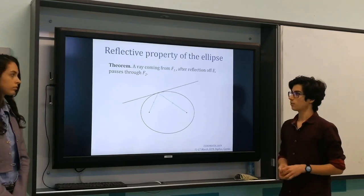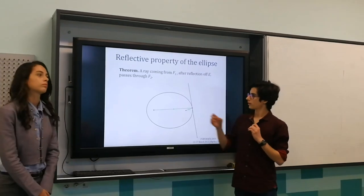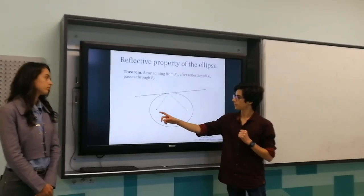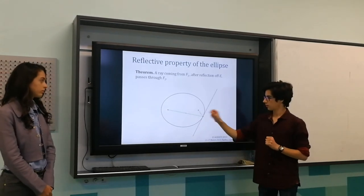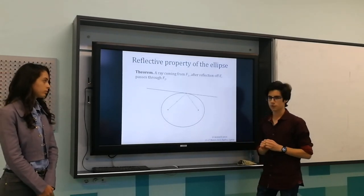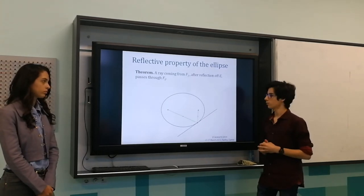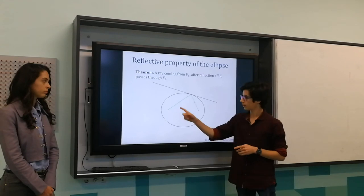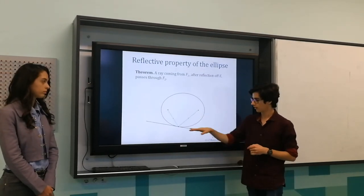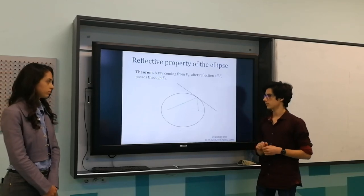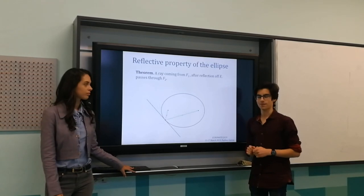Similarly to the parabola, the ellipse has its own reflective property: a ray coming from one of the foci F1, after reflection off the ellipse, passes through the other focus F2. The family of lines E facilitates the proof of that theorem. We use the fact that when a ray reflects on the ellipse E, it actually reflects on the tangent line which touches the ellipse at the point of reflection, and this line is from the family of lines.